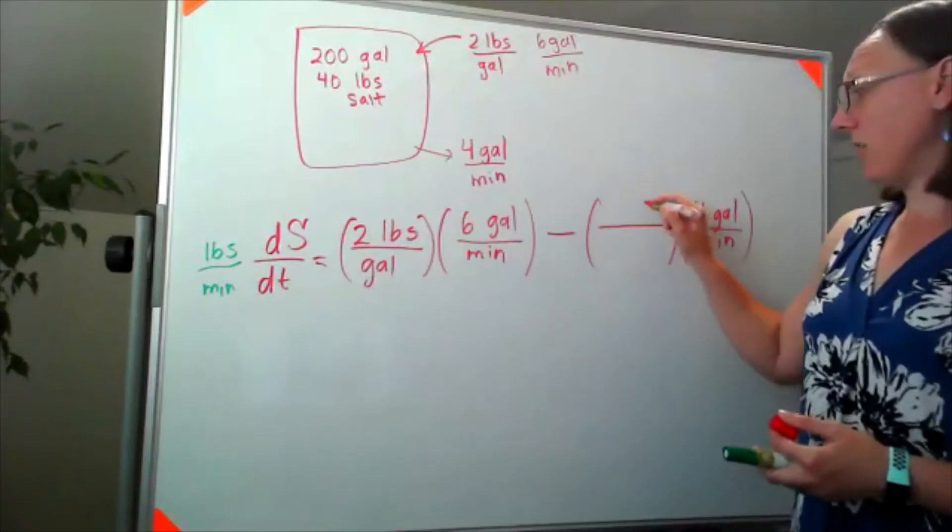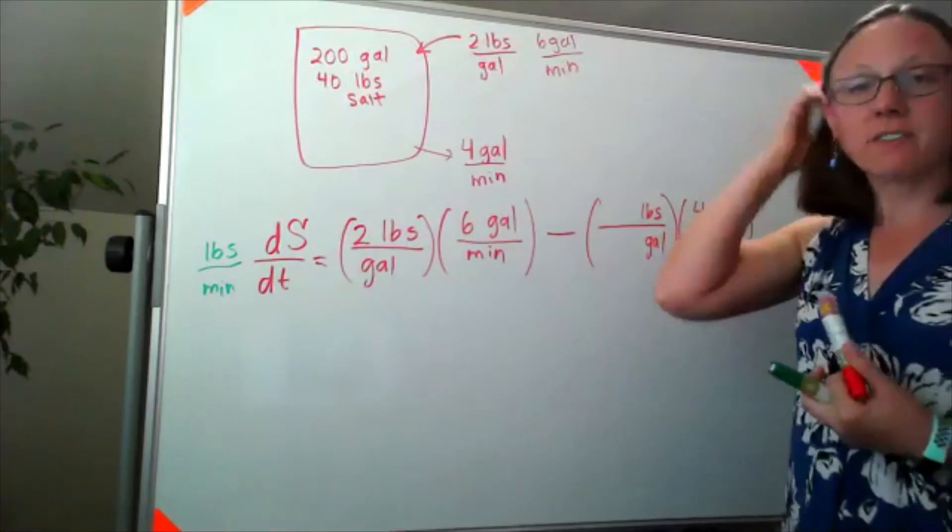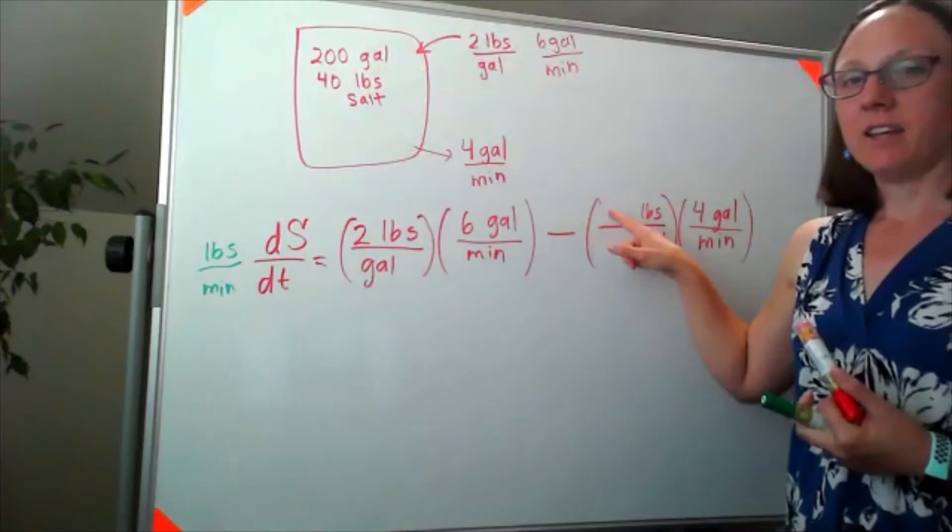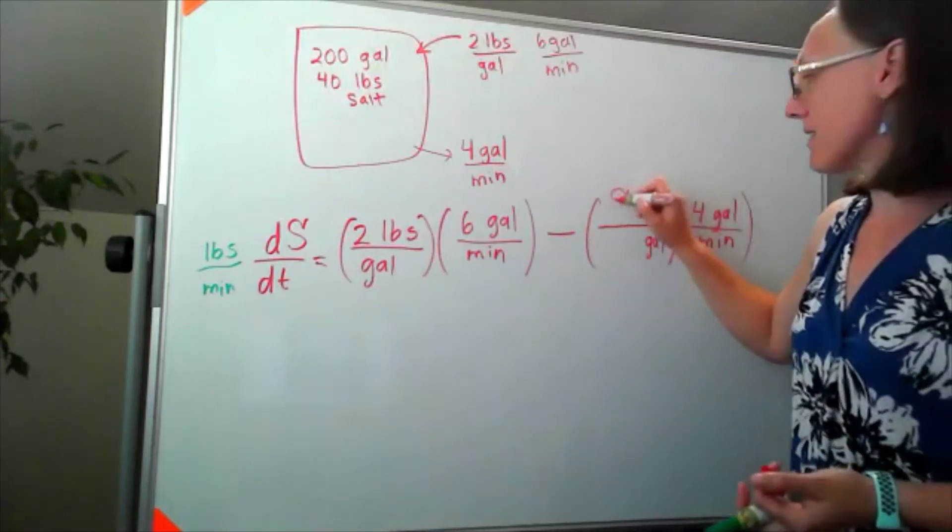I need something with units of pounds per gallon, and in terms of the pounds, since this is coming out of my tank, the number of pounds of salt in my tank is S.